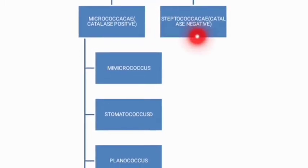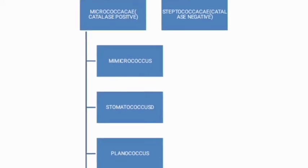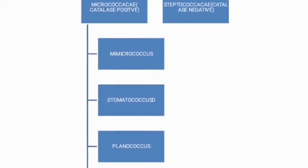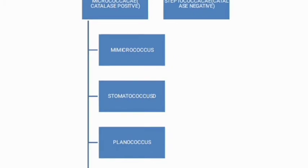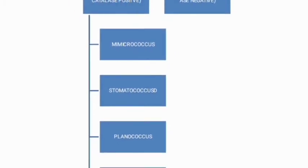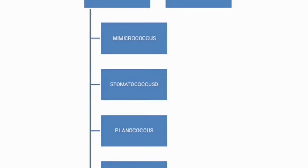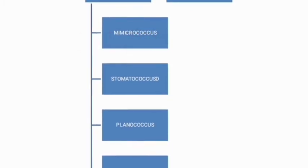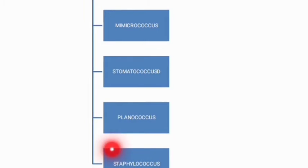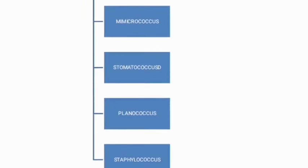Streptococcaceae are catalase negative gram positive cocci, generally arranged in pairs or chains. The family Micrococcaceae is further divided into four genera: Micrococcus, Stomatococcus, Planococcus, and Staphylococcus. In this video we are going to discuss Staphylococcus in detail.